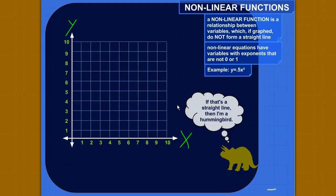So a non-linear function is a relationship which, if you were to put it on a graph, it would not form a straight line. So linear means line, non-linear means not a line.